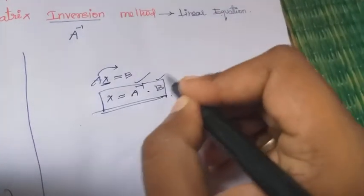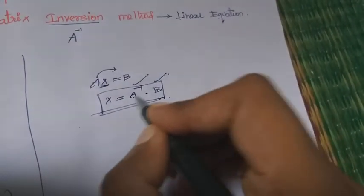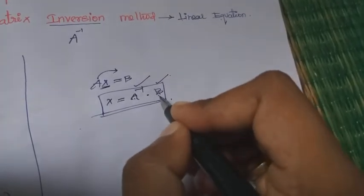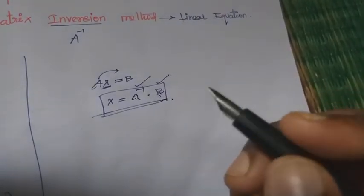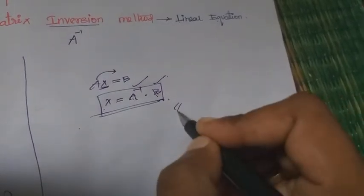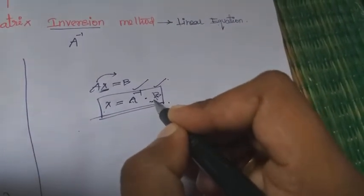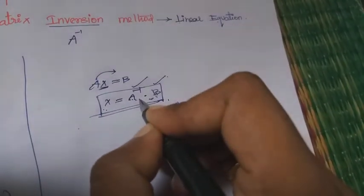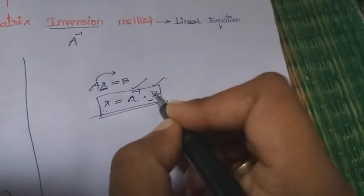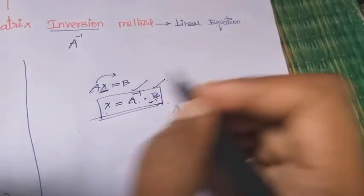Product in this two matrices, so finally we get the variable values. Understand? Yes. So in the formula, you need to check X equal to A inverse into B. The linear equation general form: AX equal to B.